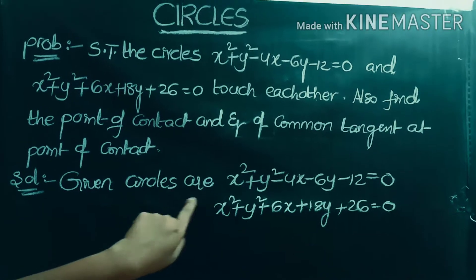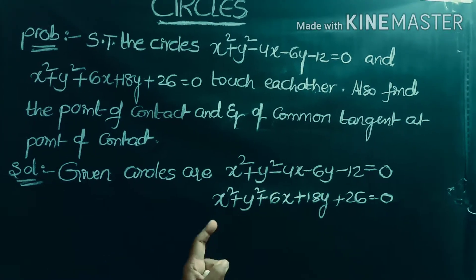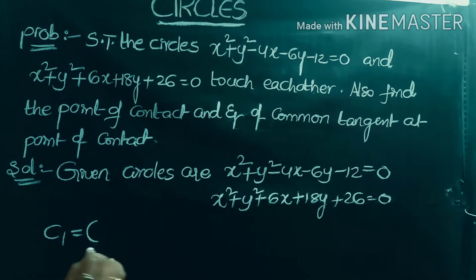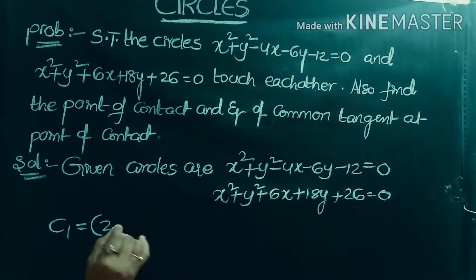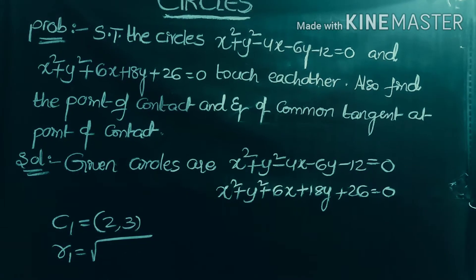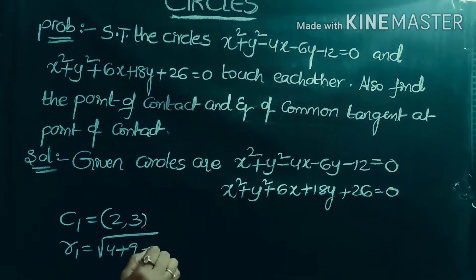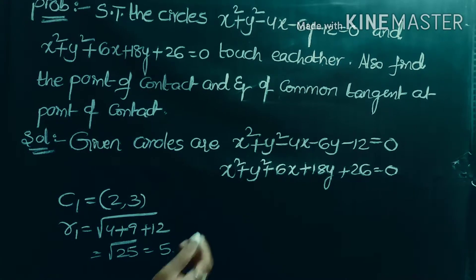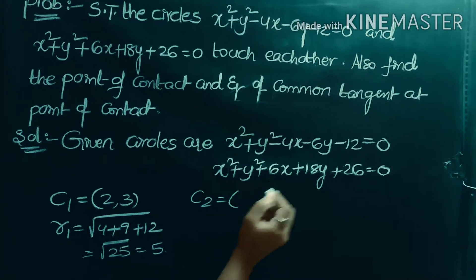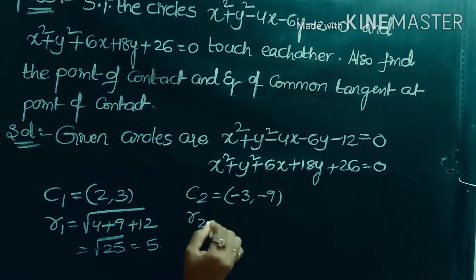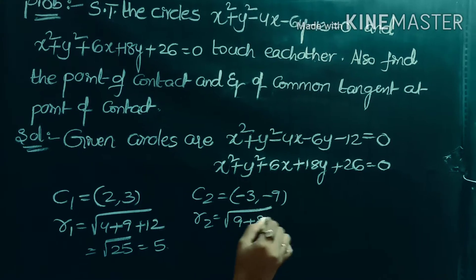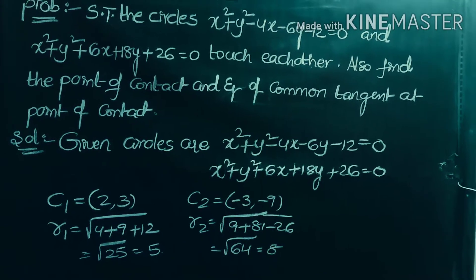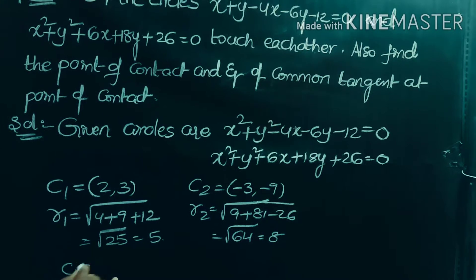The given circles are x² + y² - 4x - 6y - 12 = 0 and x² + y² + 6x + 18y + 26 = 0. For the first circle, c1 = (2, 3) and r1 = √(4 + 9 + 12) = √25 = 5. For the second circle, c2 = (-3, -9) and r2 = √(9 + 81 - 26) = √64 = 8.